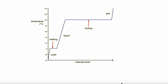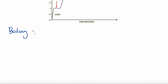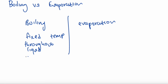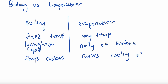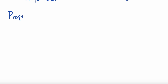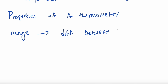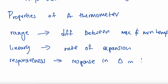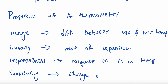Let's talk about thermal physics. This is a heat curve. When comparing boiling versus evaporation: boiling occurs at a fixed temperature throughout the liquid and stays constant. Evaporation can occur at any temperature, only on the surface, and causes a cooling effect. The properties of a thermometer include: range — the difference between maximum and minimum temperature; linearity — the rate of expansion; responsiveness — the response to a change in temperature; and sensitivity — the change of length per degree.